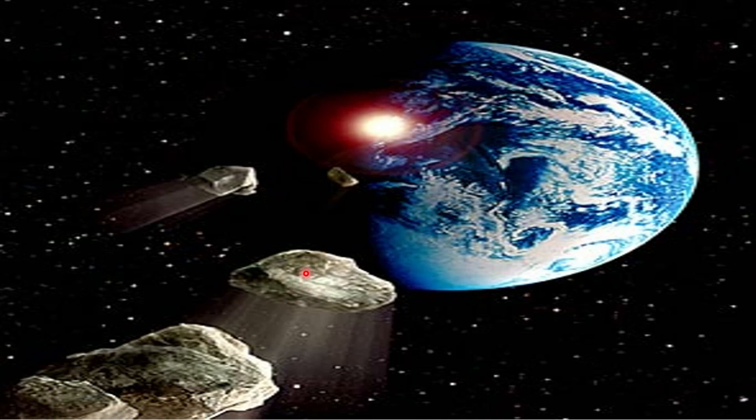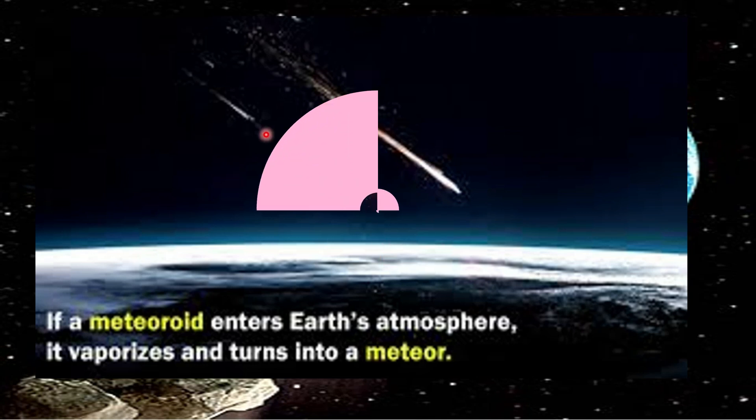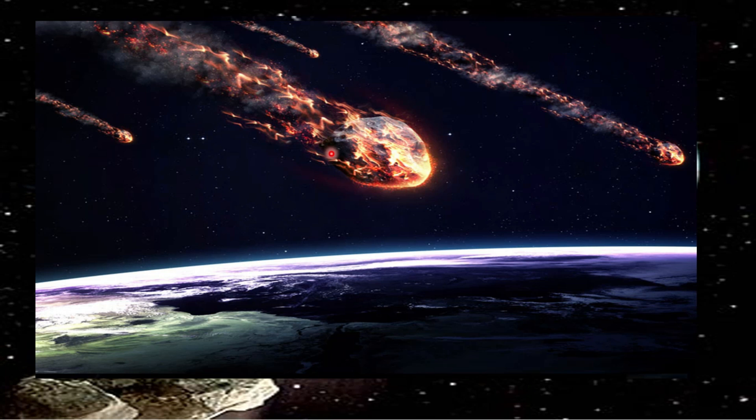This is the meteoroid that's floating and moving in space. If the meteoroid enters the Earth's atmosphere, it will vaporize and turn into a meteor. There will be molecular friction between the air and the meteor, which produces heat until it burns, resulting in a streak of light.